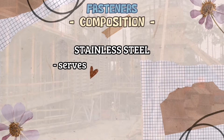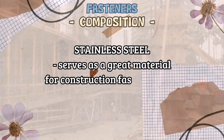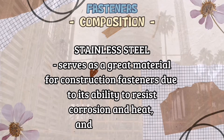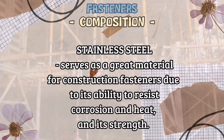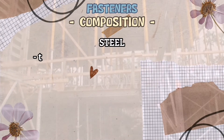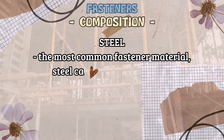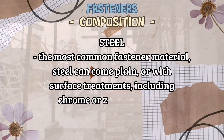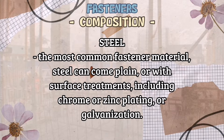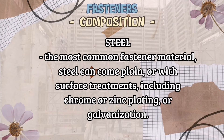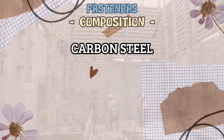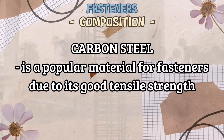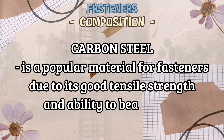Stainless steel serves as a great material for construction fasteners due to its ability to resist corrosion and heat, and its strength. Steel is the most common fastener material. Steel can come plain or with surface treatments, including chrome or zinc plating or galvanization. Carbon steel is a popular material for fasteners due to its good tensile strength and ability to bear loads.